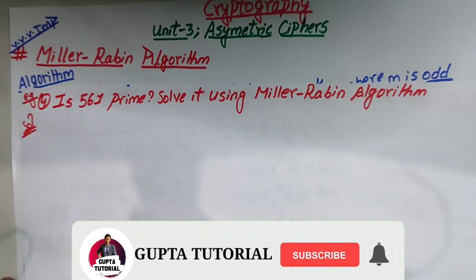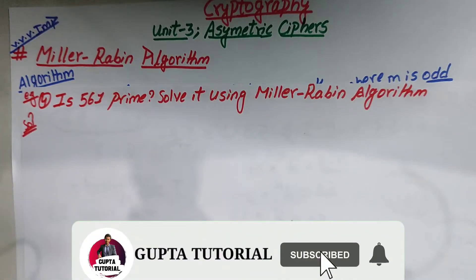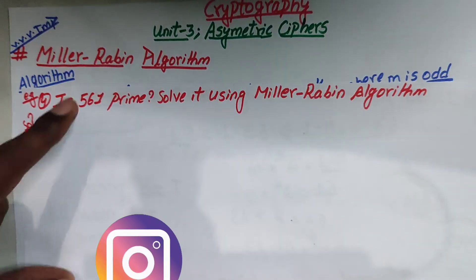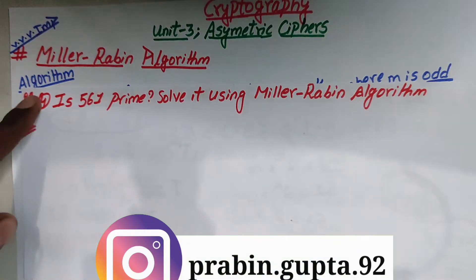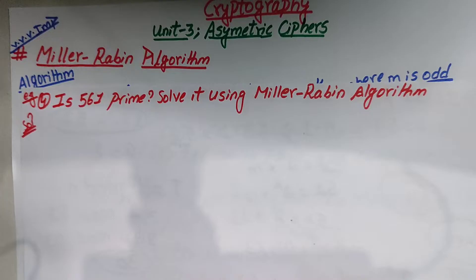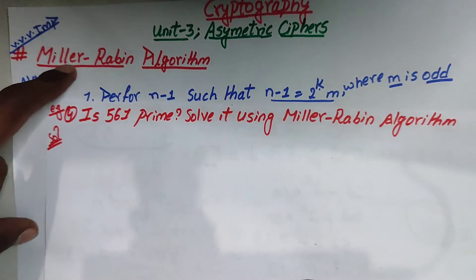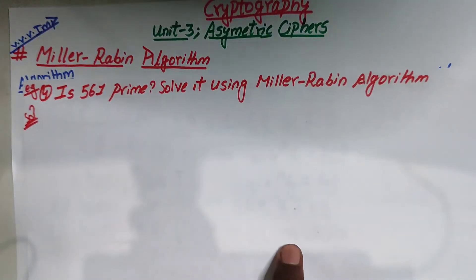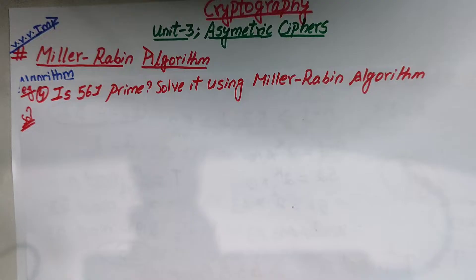Hey guys, welcome back to my channel. Today we are doing the last example of the Miller-Rabin algorithm, which is example number 4. In this video, we have already made a playlist with three Miller-Rabin algorithm examples. You can check the playlist link in the description.